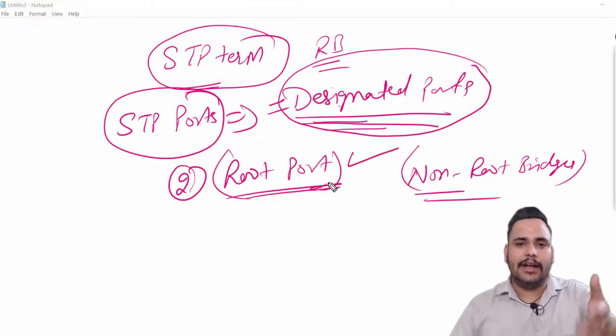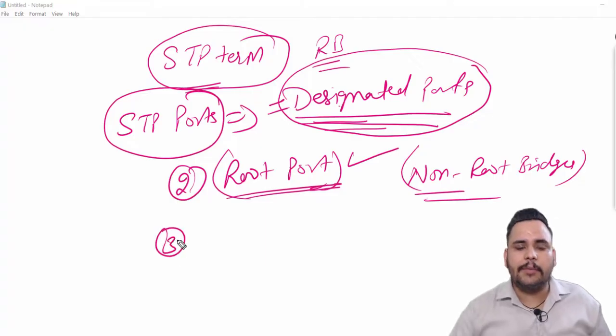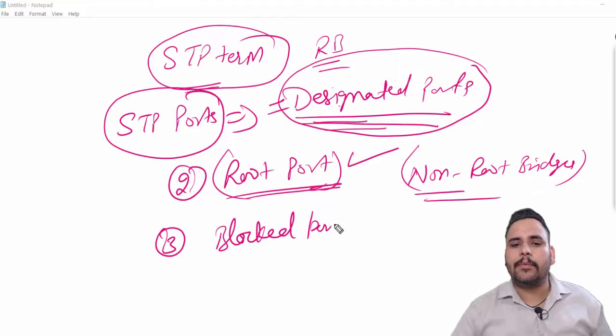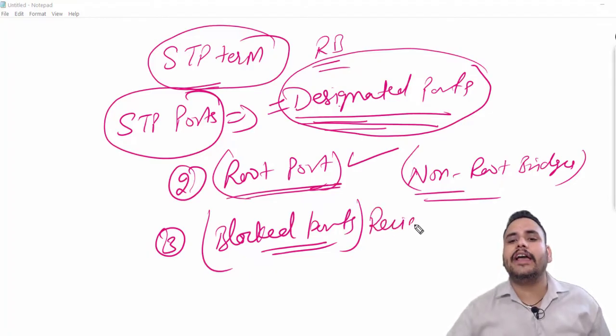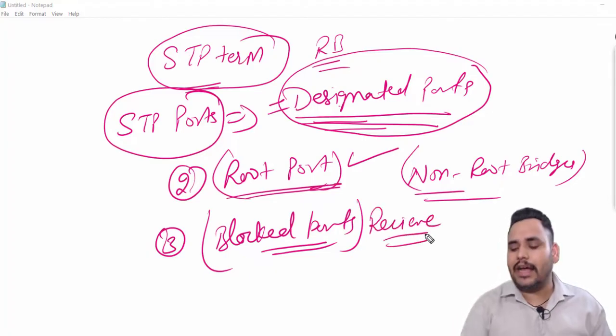The third port named is blocked port. Blocked ports are the ports those would not forward frames from their interface. They can only receive the information. So these are the STP ports.